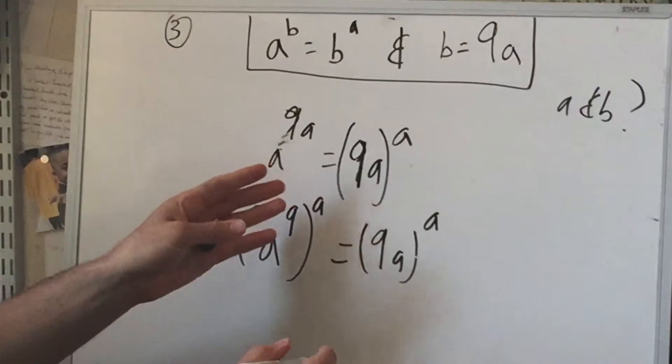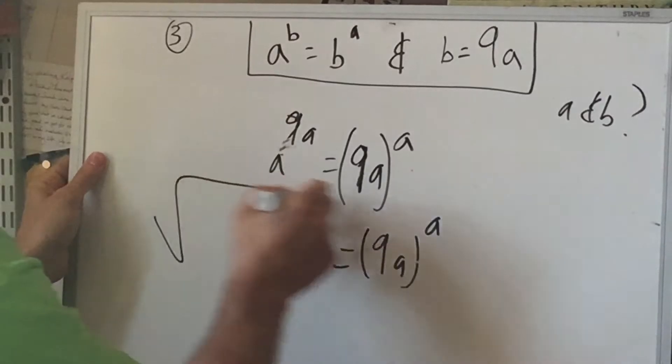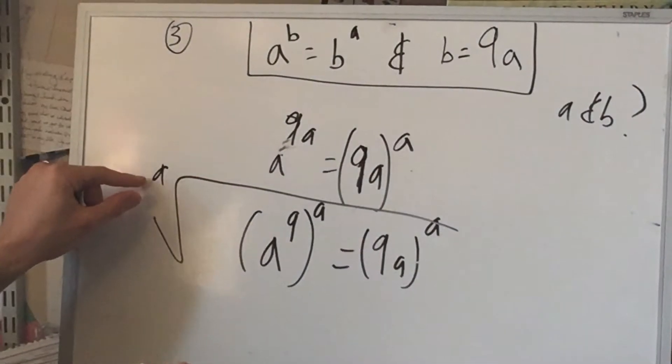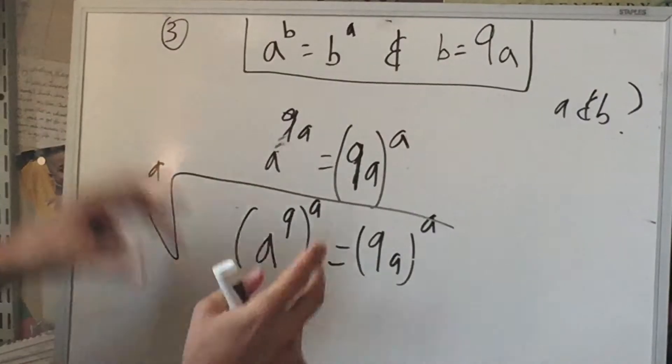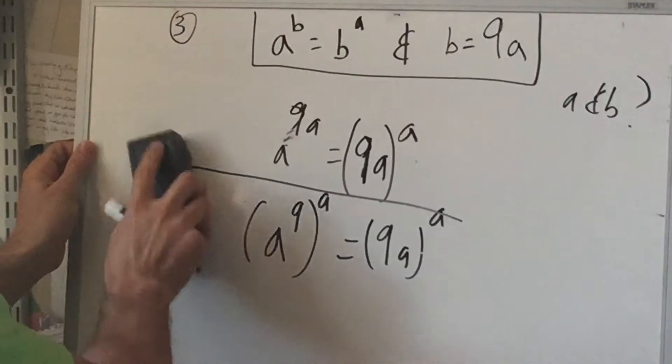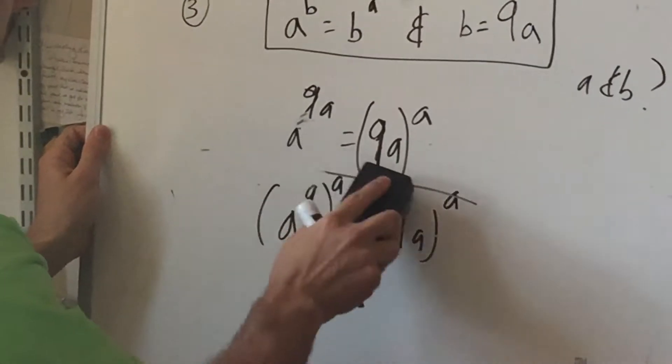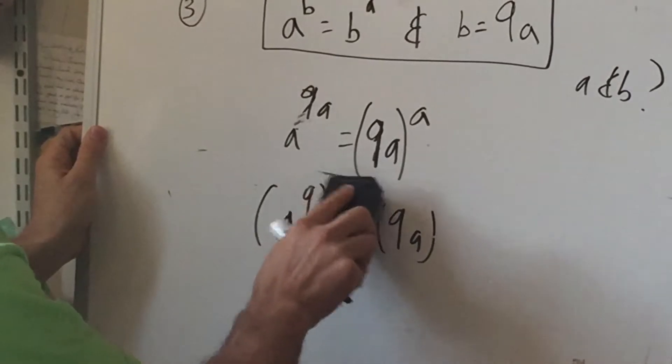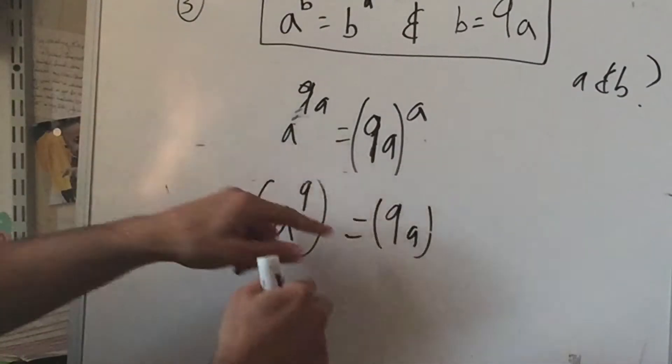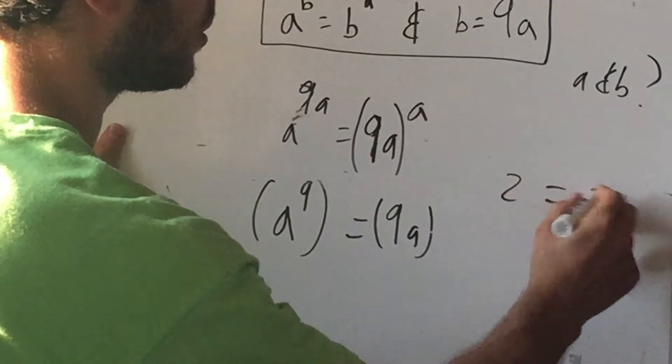So formally what we're doing is we're taking the 8th root. But you can just conceptually think of it as just dropping whatever they share. So since they both share the A, we're going to drop the A from both sides.